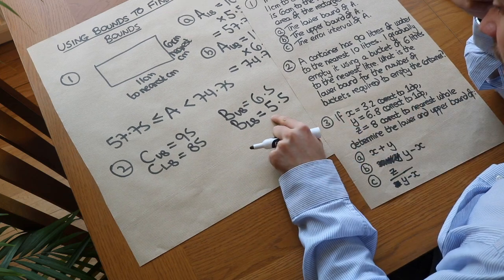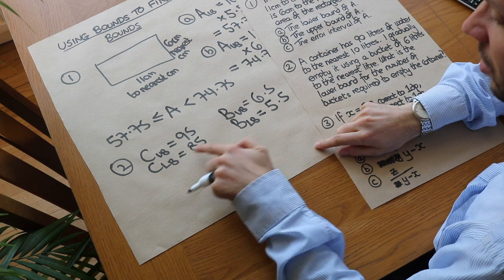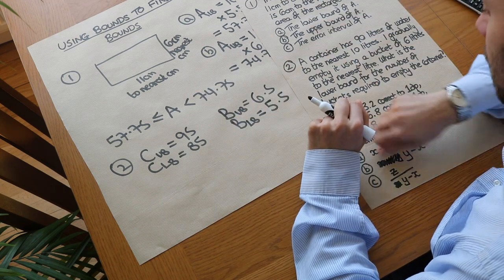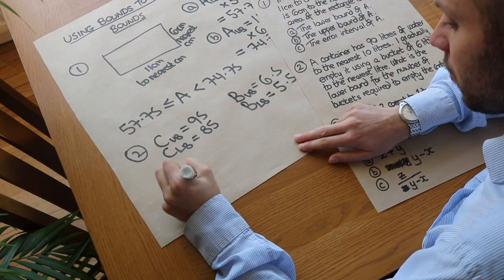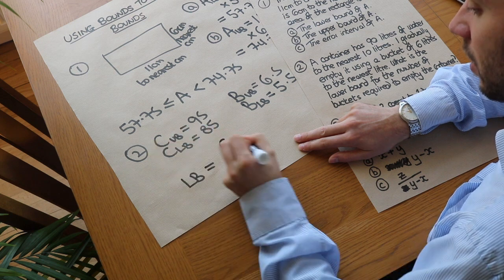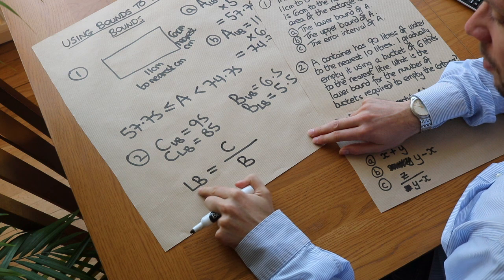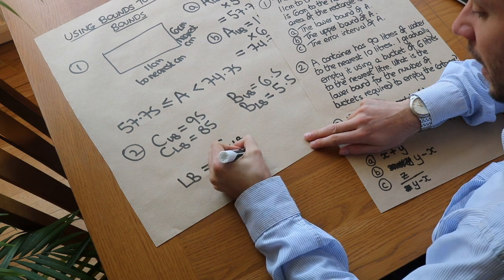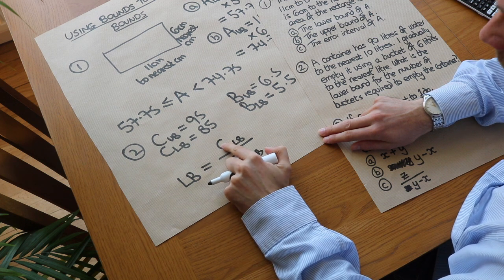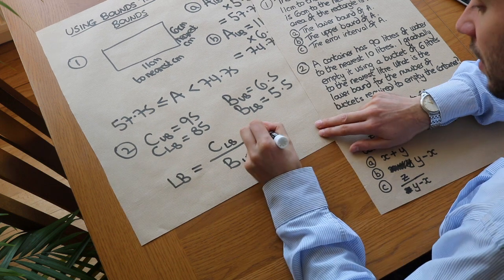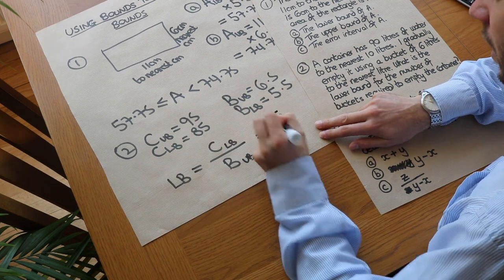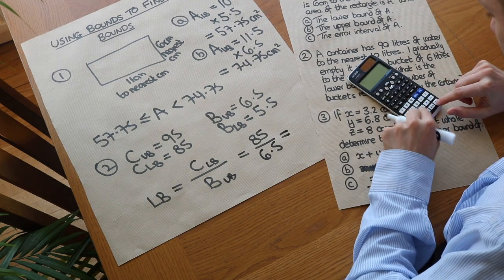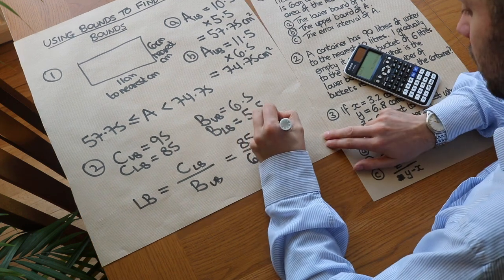We want the lower bound for the number of buckets needed to empty the container. We divide the volume of the container by the volume of the bucket. To get the lowest possible result, we use the lowest value of the container divided by the largest value of the bucket — that's 85 divided by 6.5, which gives 13.1 buckets.